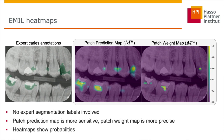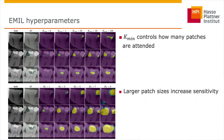Both patch predictions as well as attention weights can be visualized as heat maps, where the pixels can be interpreted as probabilities. While the patch prediction map is more sensitive, the weight map is more precise. By increasing Kmin, one can bias the model to be more sensitive, as shown in the first three rows. Similarly, increasing the patch size increases the sensitivity, as shown in the last three rows.